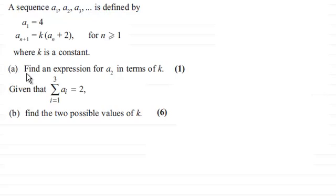In part a, we need to find an expression for the second term a2 in terms of k. Then given that the sum from i=1 to 3 of a_i equals 2, we've got to find the two possible values of k. If you'd like to have a go at this, just give you a moment to pause the video.